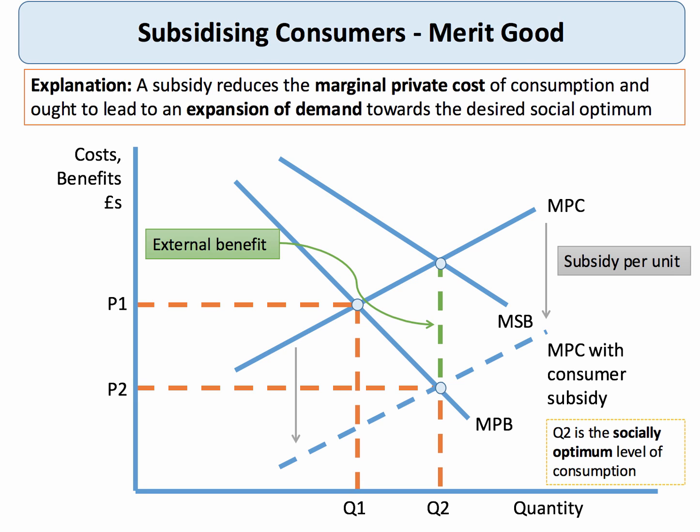That subsidy, in theory, would encourage consumption to expand to Q2, reaching an optimum level of consumption from society's point of view. But keep in mind that subsidies themselves don't come cost-free — there are clearly opportunity costs. The coefficient of price elasticity of demand would determine, for example, how big a subsidy we have to offer to achieve a given change in consumption and move towards output Q2.